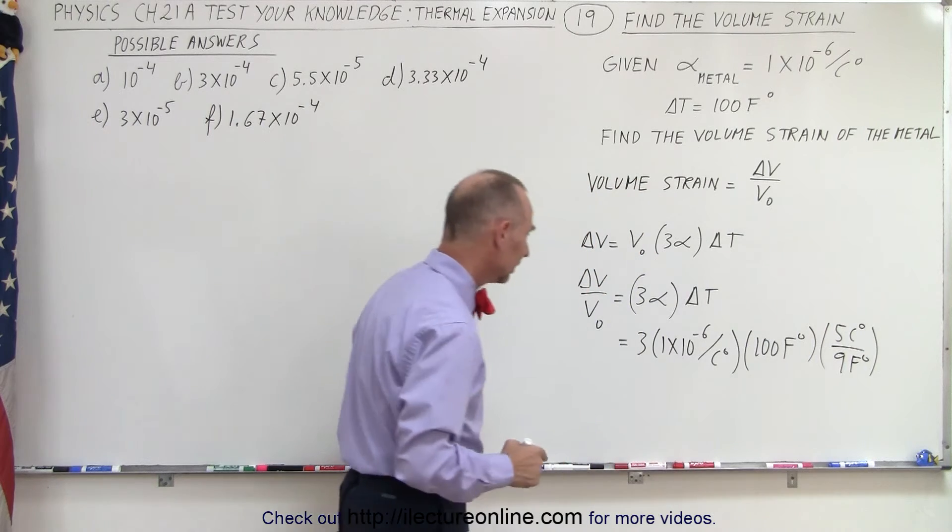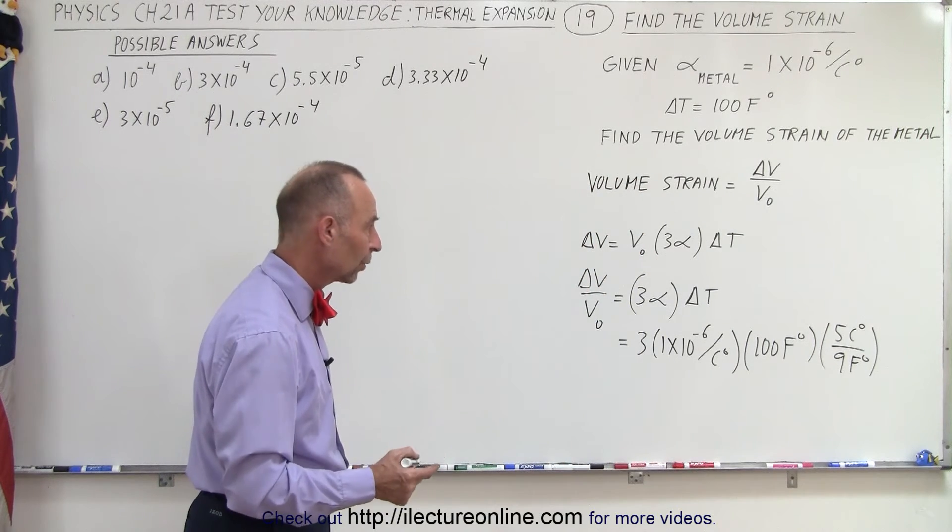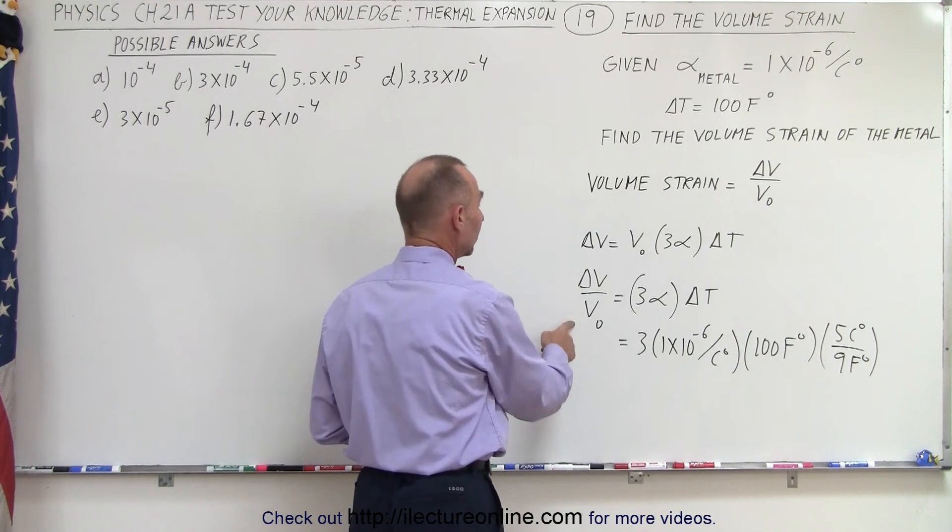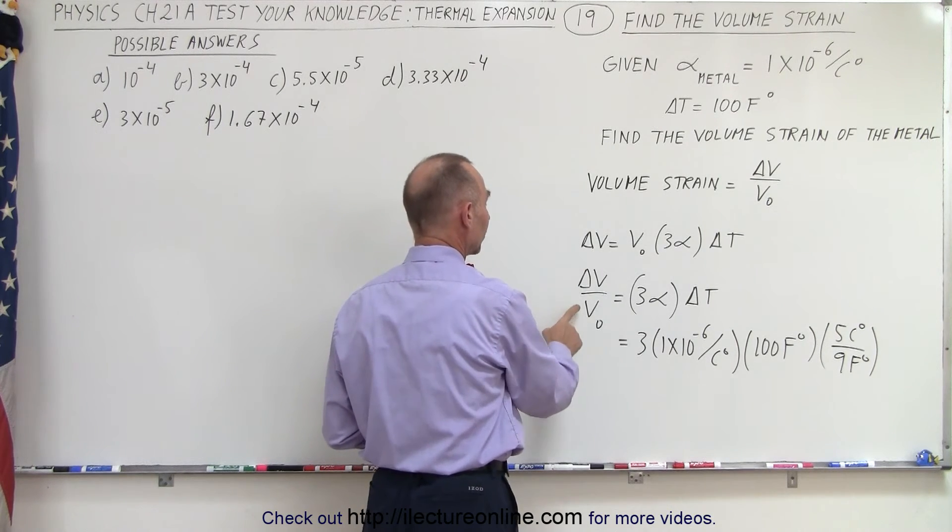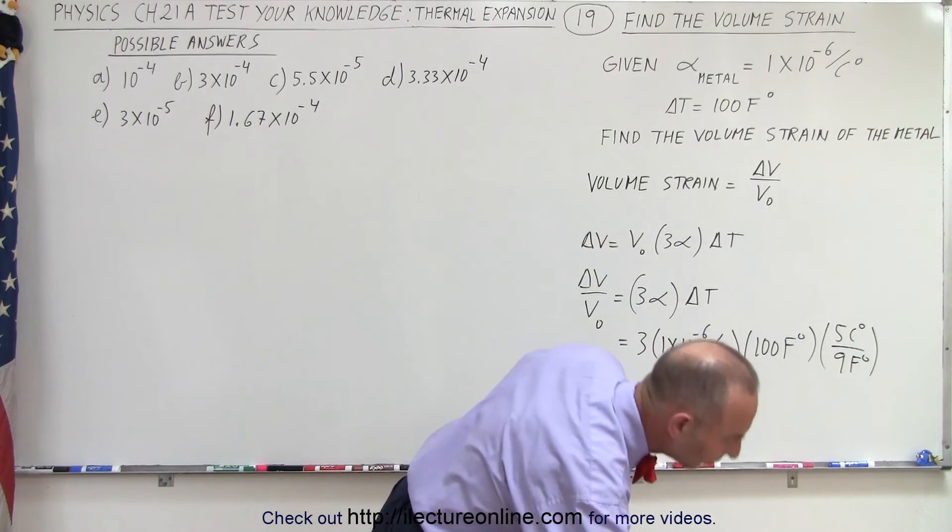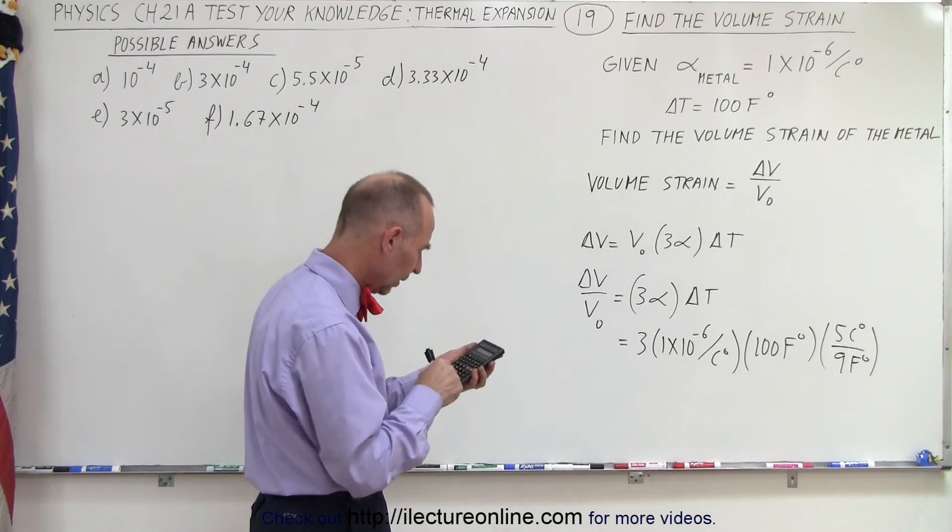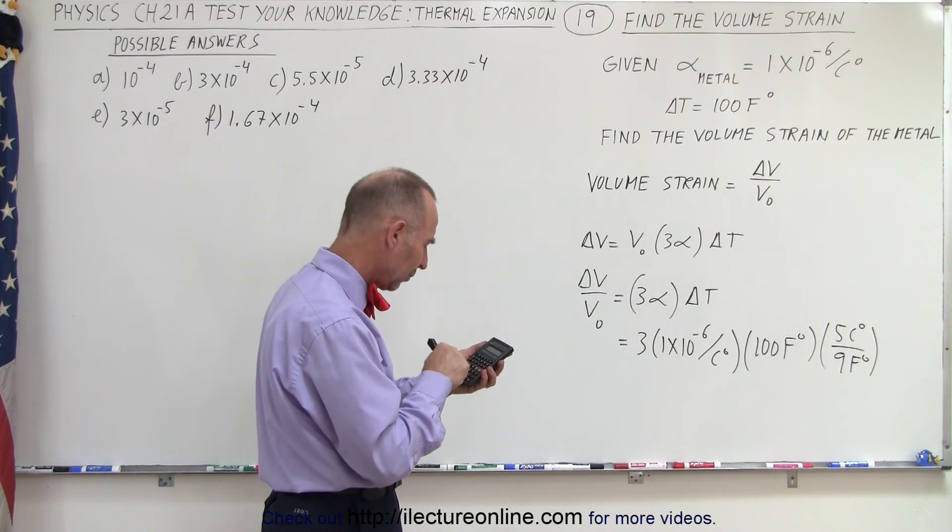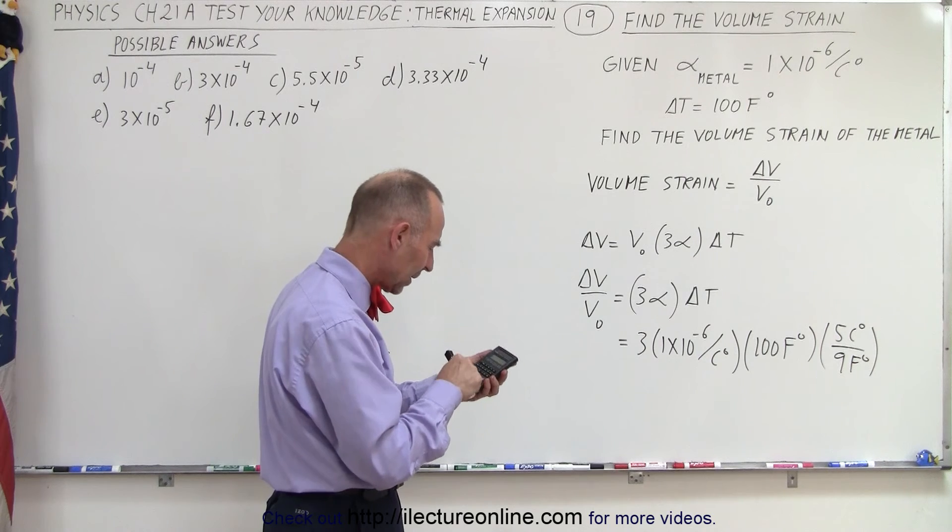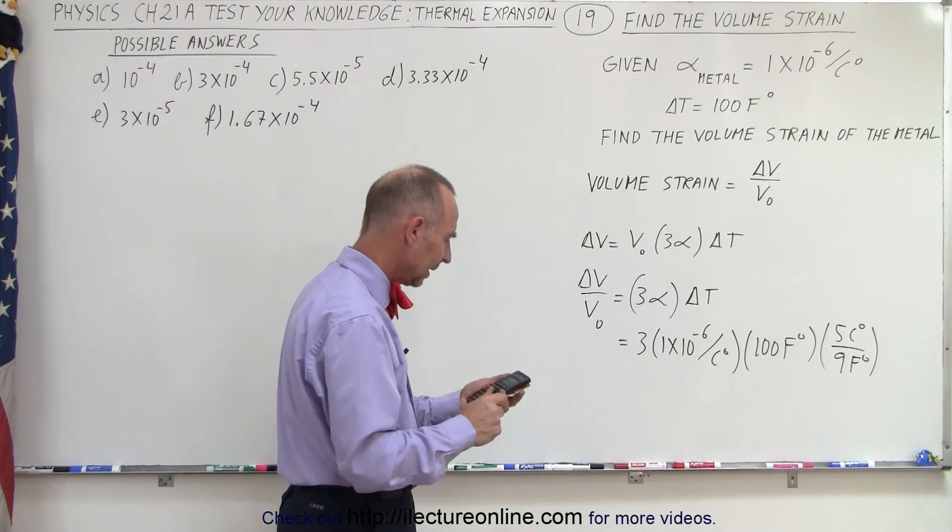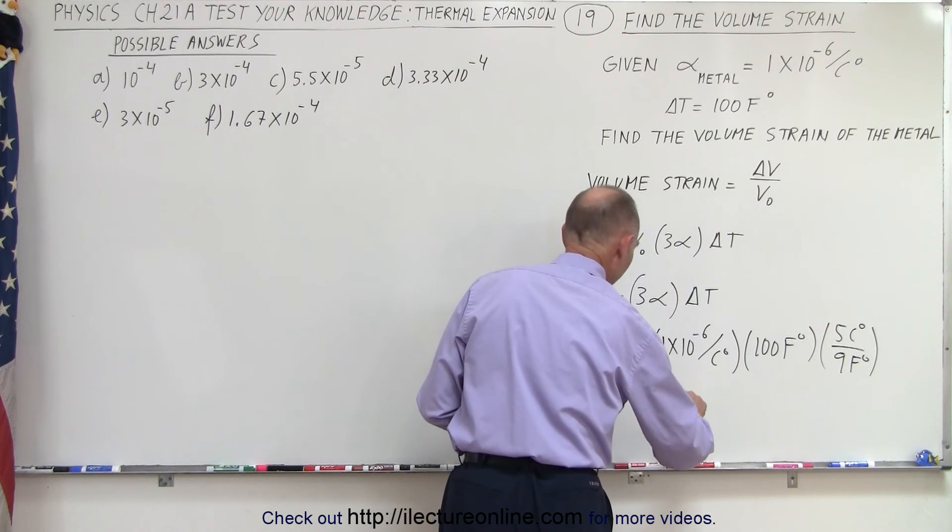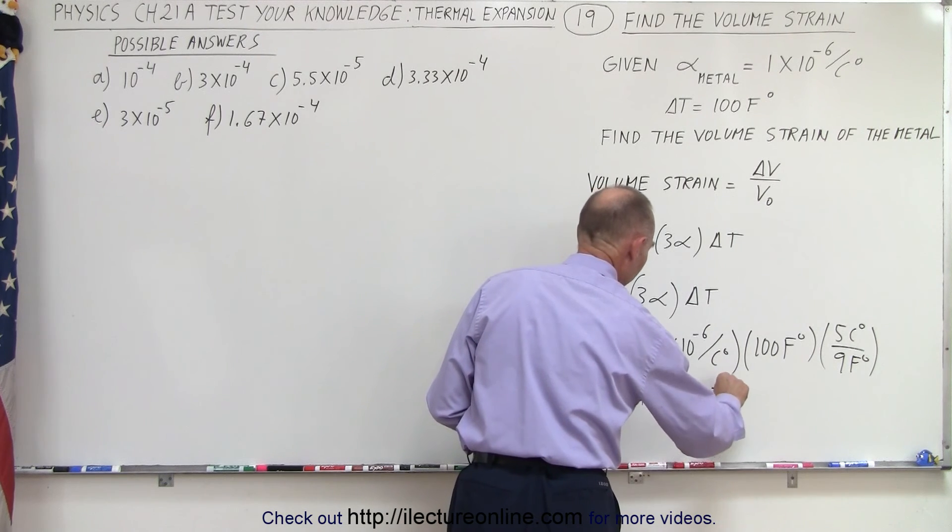So that gives us—well, the units would completely cancel out, which is what we want because the ratio of the change in the volume to original volume is unitless. So let's see what this number is. So three times 1 × 10^-6 times 100 times five divided by nine equals, and I get 1.67 × 10^-4.